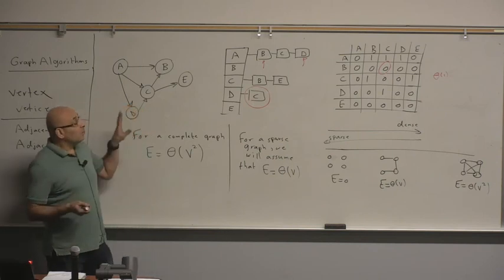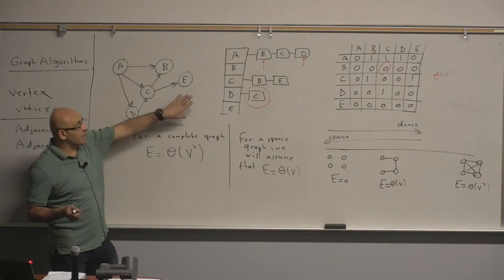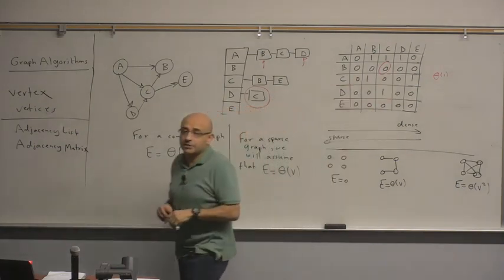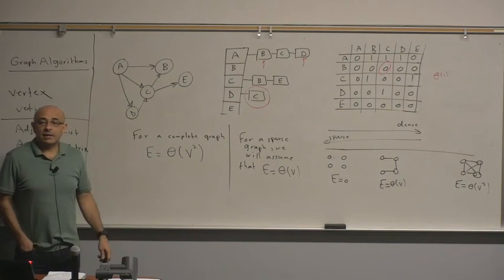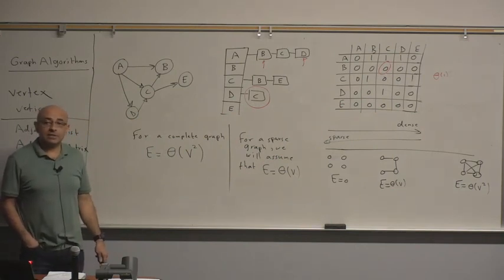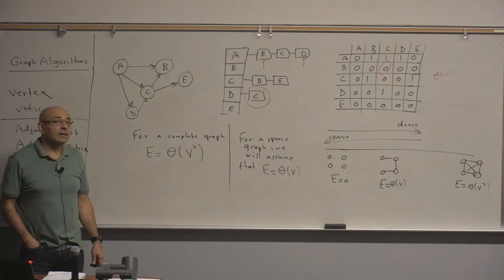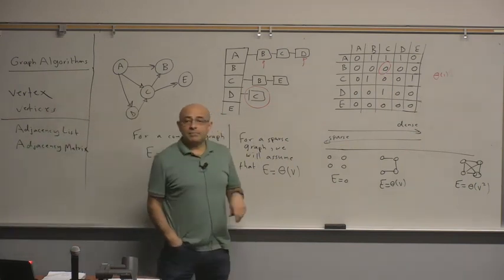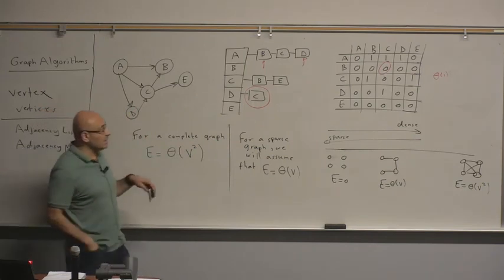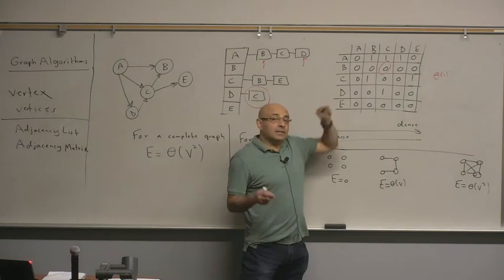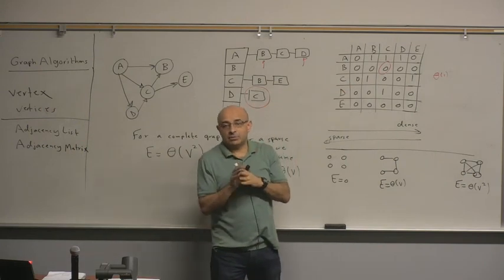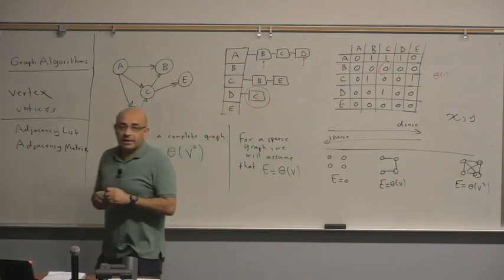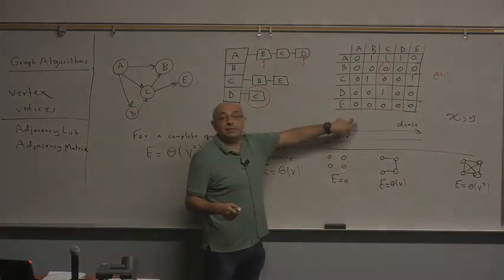We mentioned one operation more efficient with adjacency lists. An operation that can be done more efficiently with an adjacency matrix is: given two vertices X and Y, determine if they are neighbors or not. In the adjacency matrix, you can solve this operation in Θ(1) time.